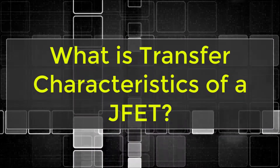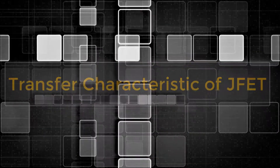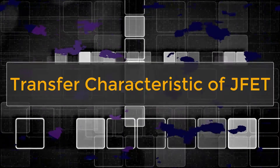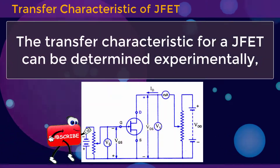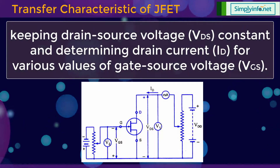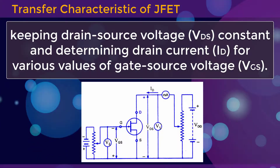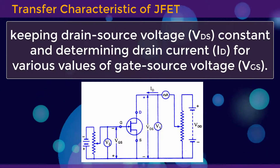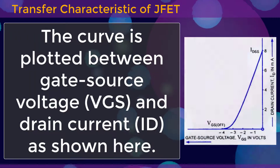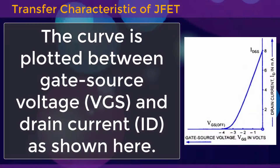Transfer Characteristics of a JFET can be determined experimentally by keeping drain-source voltage constant and determining drain current ID for various values of gate-source voltage VGS. The curve is plotted between gate-source voltage VGS and drain current ID, as shown here.